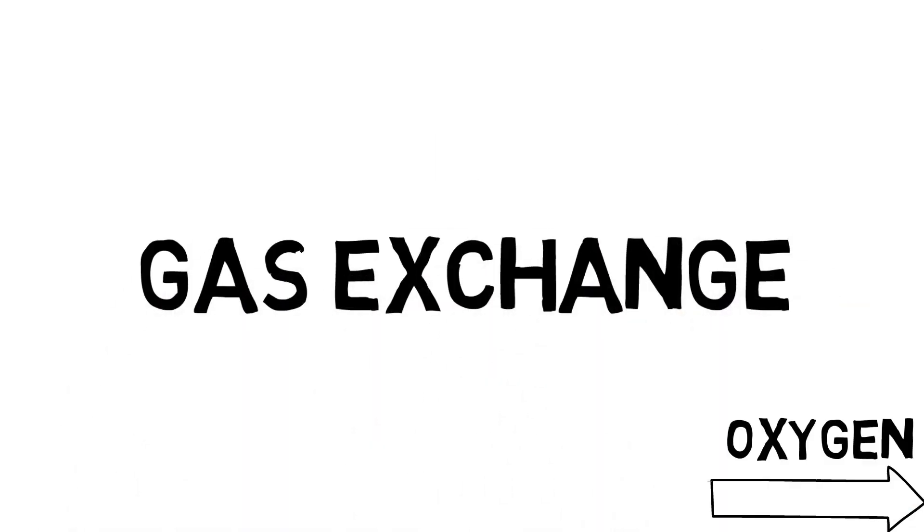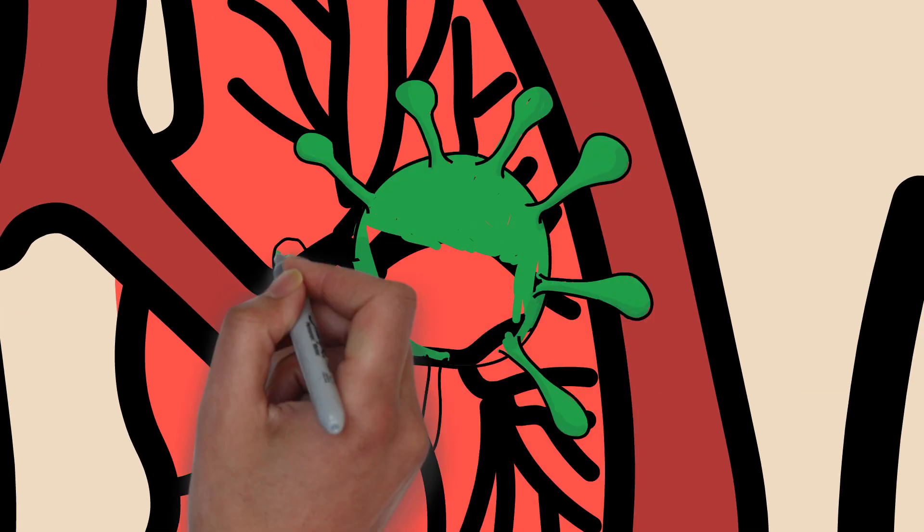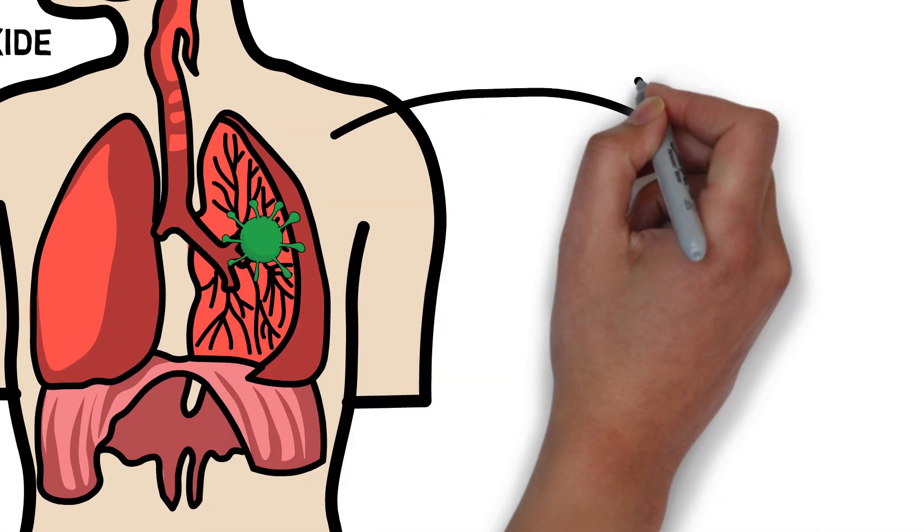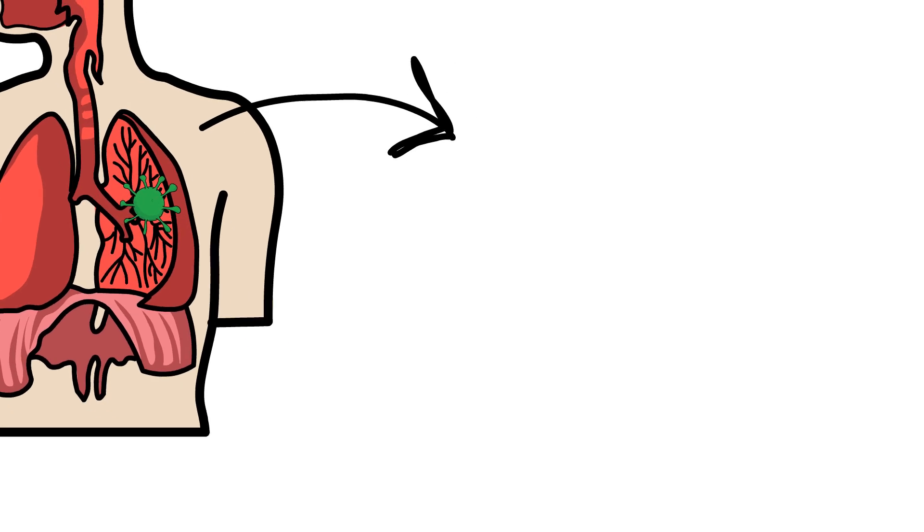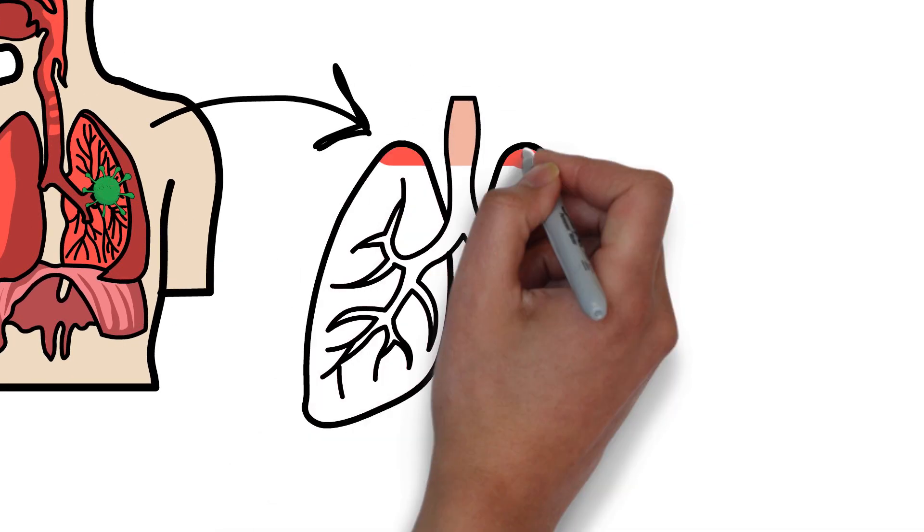Professor Bogart told us that when we become infected with COVID-19, it can cause an infection in part of this respiratory system, known as the respiratory tree, which is found in our lungs.